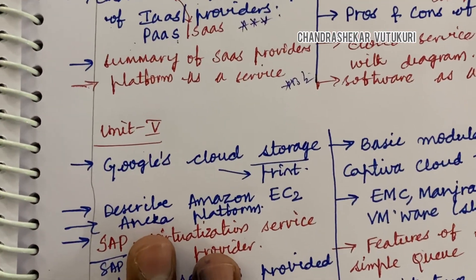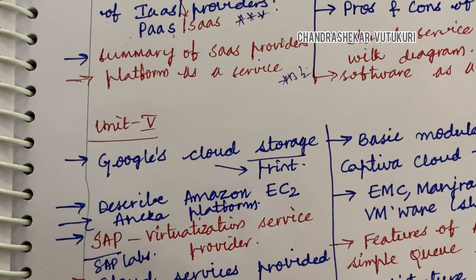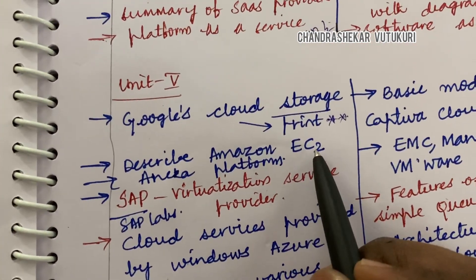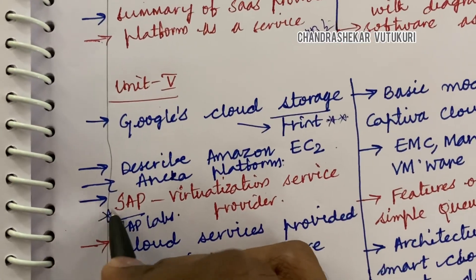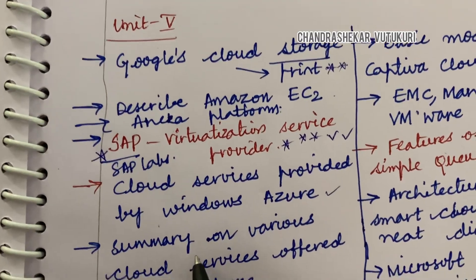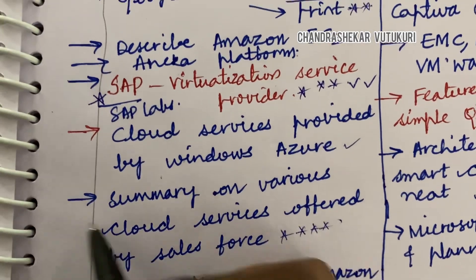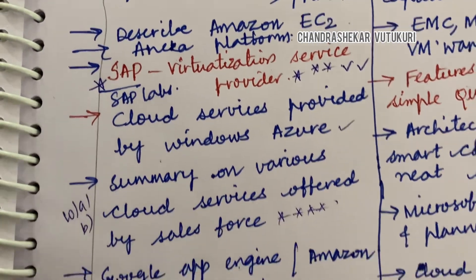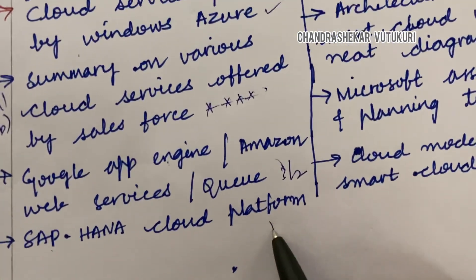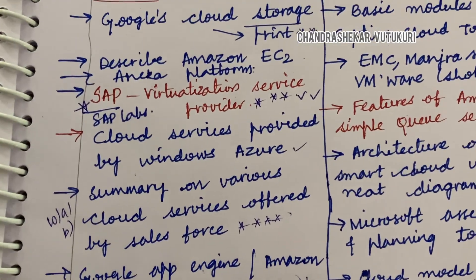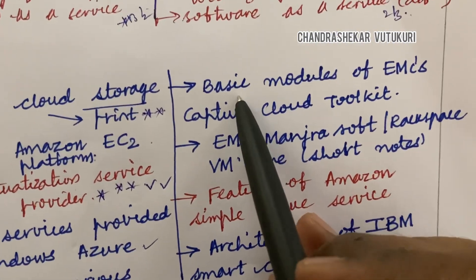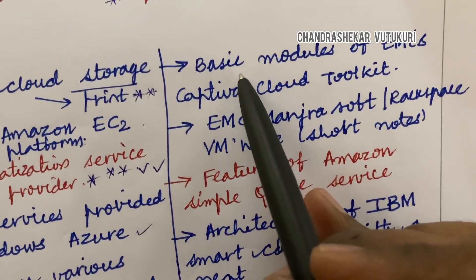Unit 5 is too lengthy in its structure and covers A and B combinations as well as short questions. Google's cloud storage and Cloud Print is a 2 mark question. Describe Amazon EC2 and NK platform. SAP virtualization service, provider, and SAP lab is a topmost question. Cloud services provided by Windows Azure, and a summary of various cloud services offered by Salesforce, are said to be 10A and 10B questions. Google App Engine, Amazon Web Services, and SAP HANA cloud platform may each be a 2 or 3 mark question. For Unit 5, write in point-wise format using numbering or symbols — do not write in paragraphs.